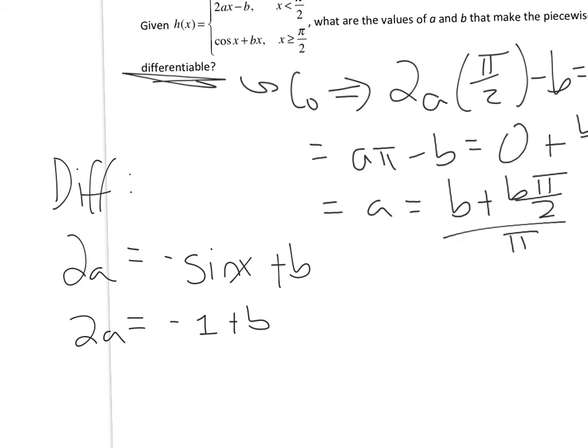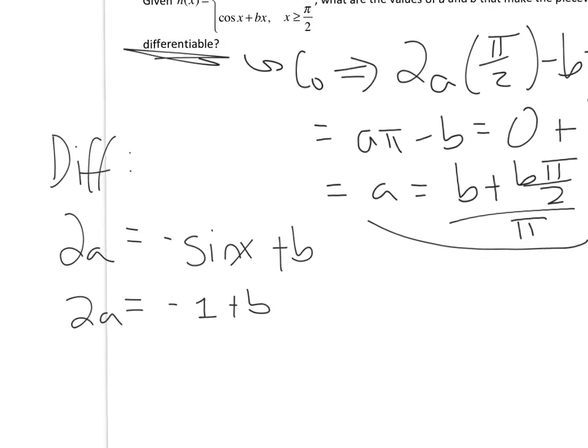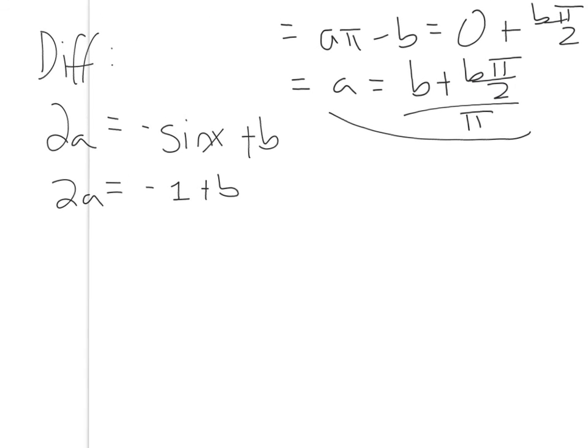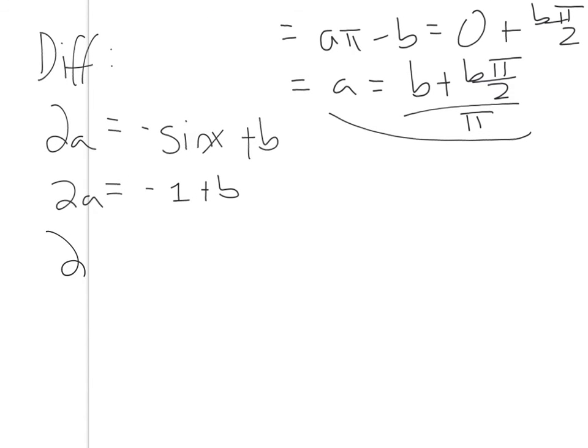Now, don't forget, I've already solved previously for a in this question. So I'm going to replace a with what it is equal to. So I'm going to get 2 times a, b pi over 2, divided by pi, equals negative 1 plus b.